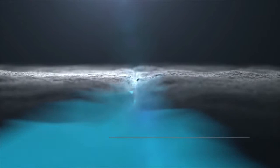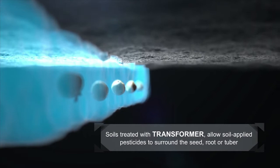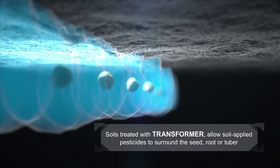The even distribution within the soil profile provided by Transformer allows the soil-applied pesticide to surround the seed, root, or tuber. This blanket of protection provides a critical barrier against damaging diseases and insects.